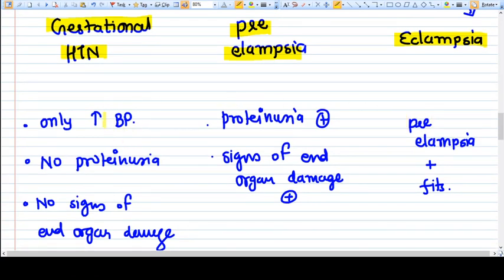In gestational hypertension, the only thing increased is blood pressure. There is no proteinuria and no signs of end organ damage. In preeclampsia, we have increased BP but adding proteinuria and signs of end organ damage in mild or severe amount. Eclampsia is when the patient ends with fits, that is seizures.